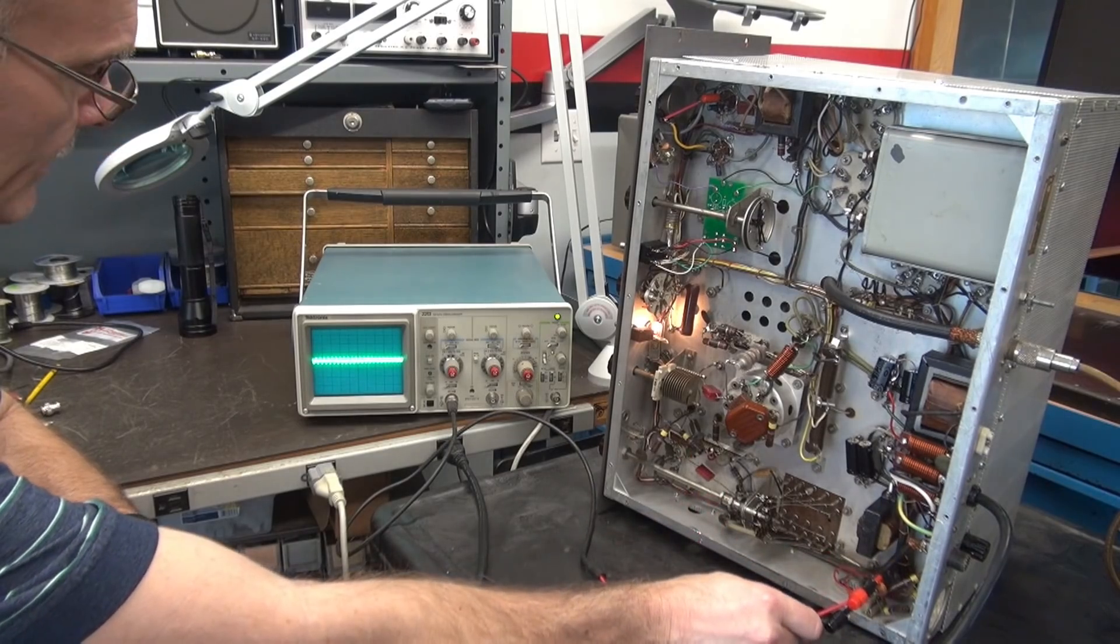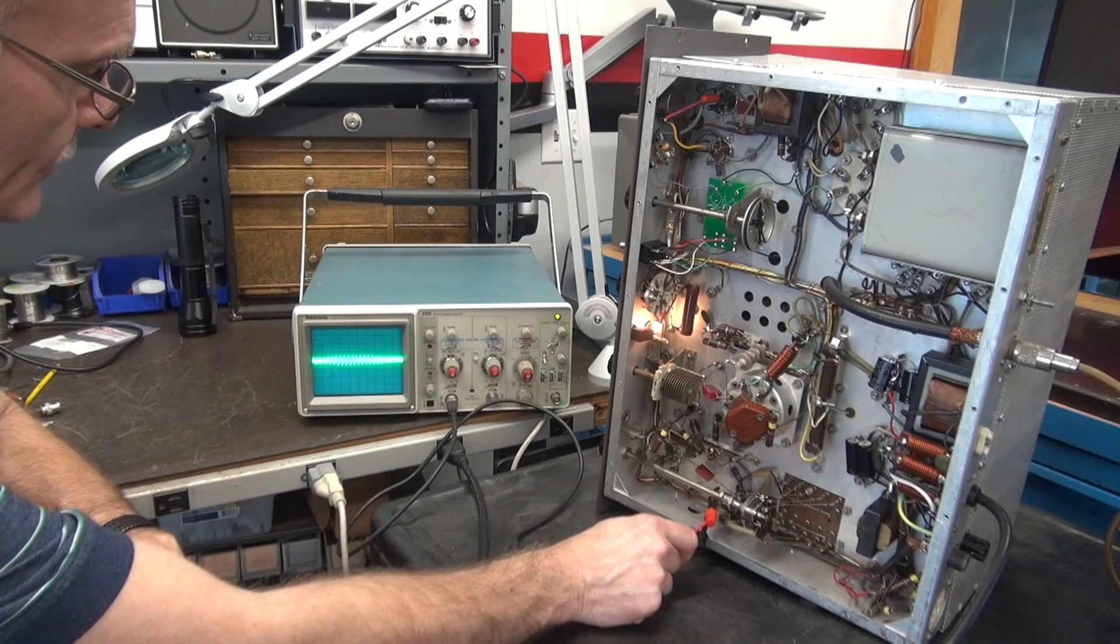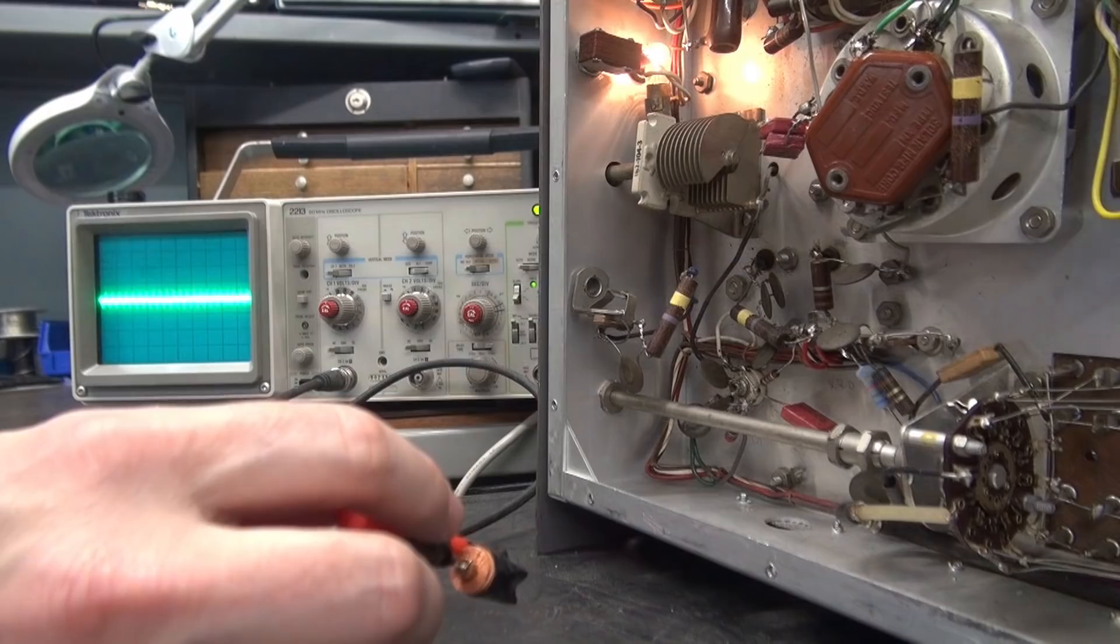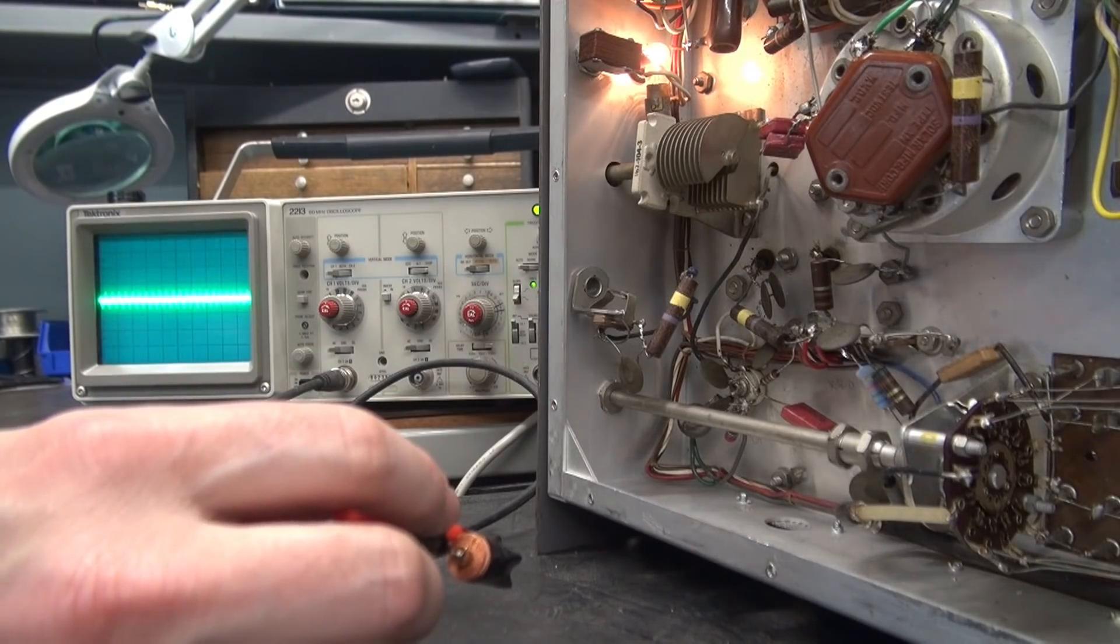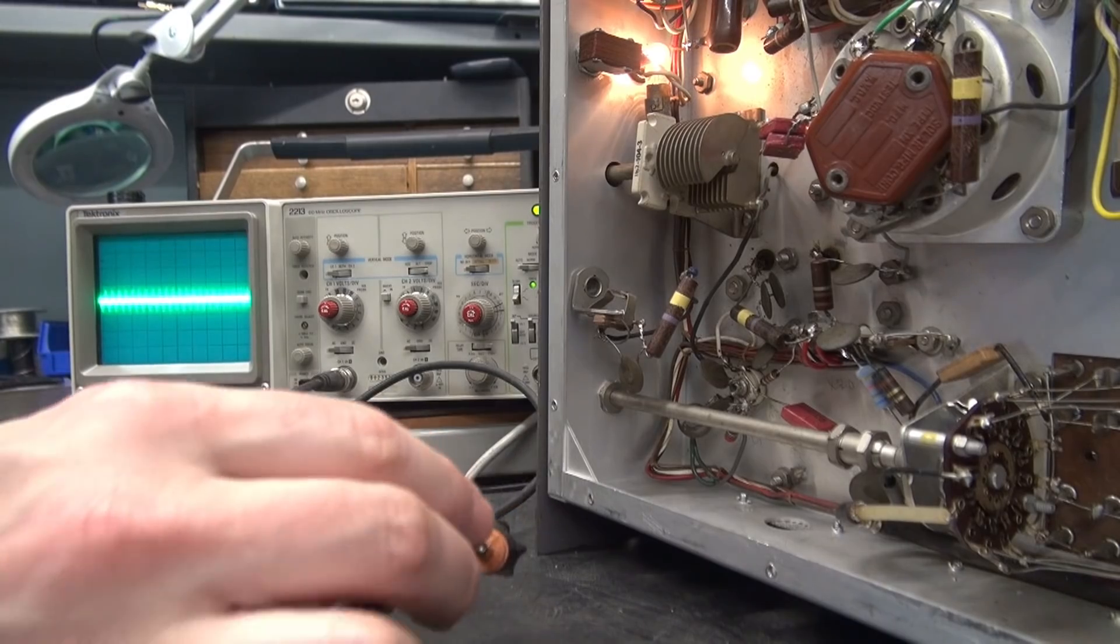So the VFO comes in back here. Scoots across. Got a little 6AU6, I believe, amplifier. Now you see the level one up a little bit? Well, I've got the camera right down here, hopefully, where you can see what I'm seeing.